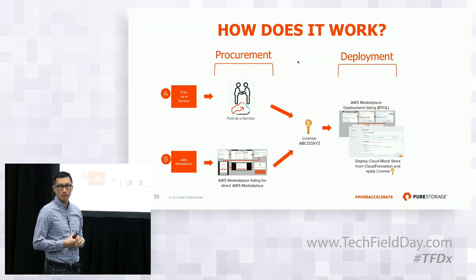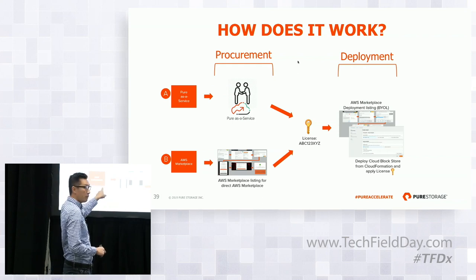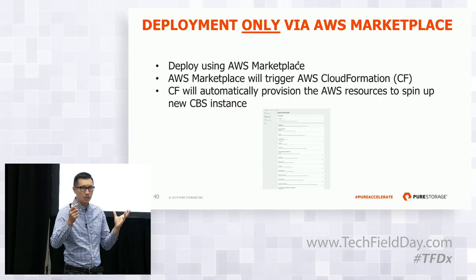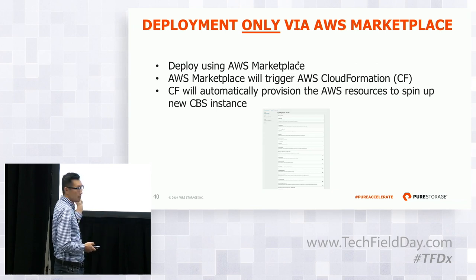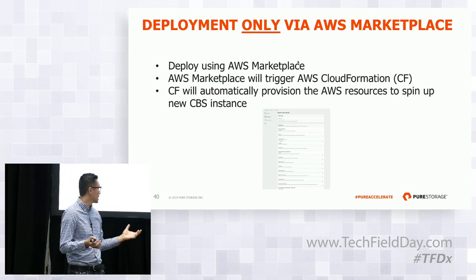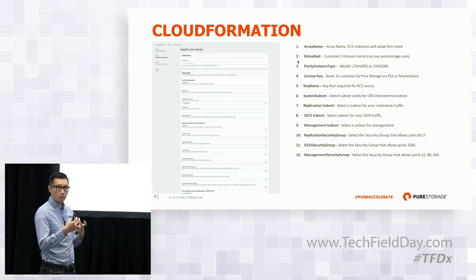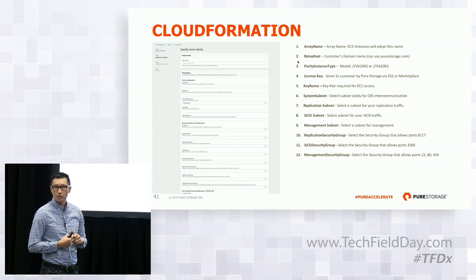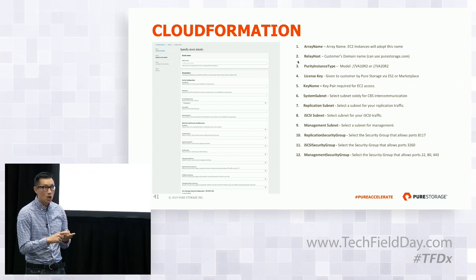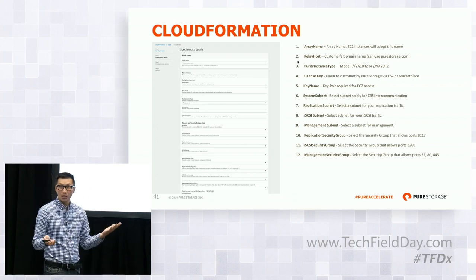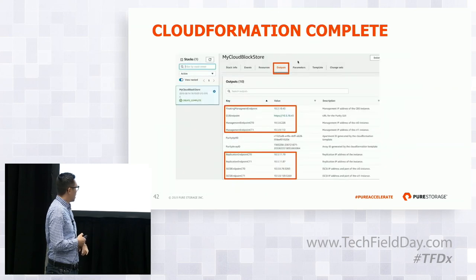The deployment goes through the AWS Marketplace. You search for Cloud Block Store and you'll see two listings — one for procurement and one for deployment. Click the deployment listing, go through next, next, next to subscribe. This takes you into your AWS account and launches you into CloudFormation. Customers familiar with AWS should know what CloudFormation is. We provide a YAML file, and you select a few parameters — the name of your instance, your license key, the model you want to deploy, and the subnets.